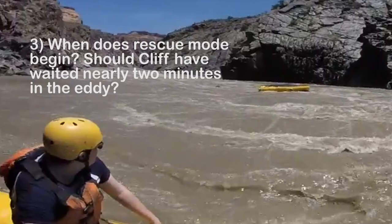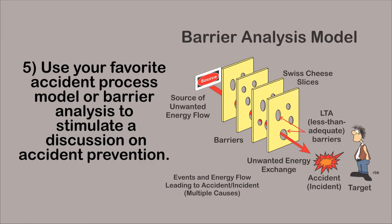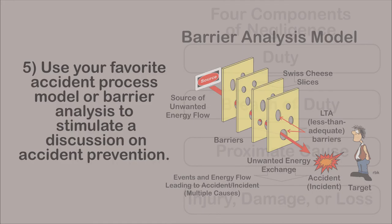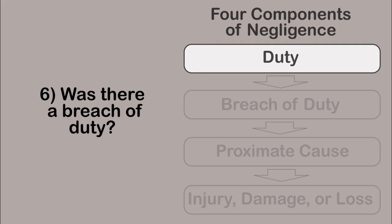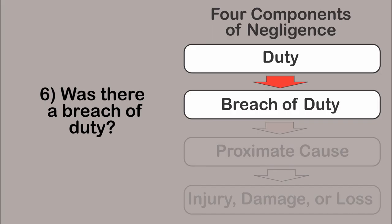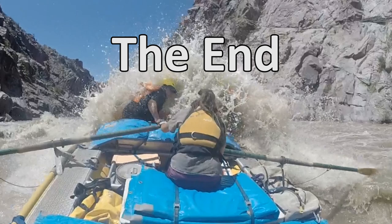Fourth, if you were the guide in Cliff's raft, could you make rescue mode into an exciting activity for passengers? What would you do? Fifth, use your favorite accident process model or barrier analysis to stimulate a discussion on accident prevention. Sixth, if this case study is used to discuss negligence, there are four components which are necessary for negligence to occur: there needs to be a duty to the plaintiff or injured party; there must be a breach of duty; there must be proximate cause between the breach of duty and the injury, damage, or loss. Note that this case was settled out of court and the plaintiff was pleased with the settlement.